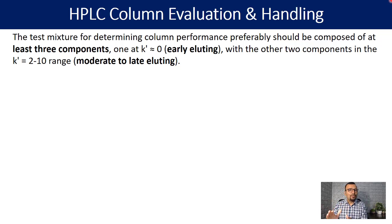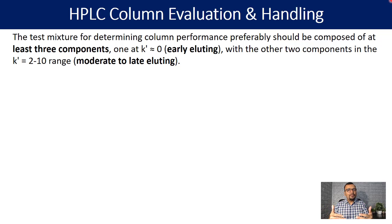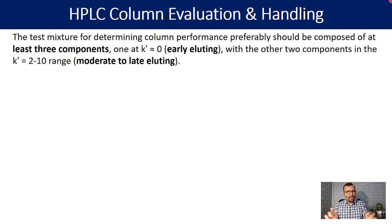If you only select one component which is, let's say, late eluting, but the column has a problem with the early eluting compound, then you are going to miss the column issues with those early eluting compounds. For that reason, having compounds eluting across the chromatography — late eluting, mid eluting, and early eluting — is important.